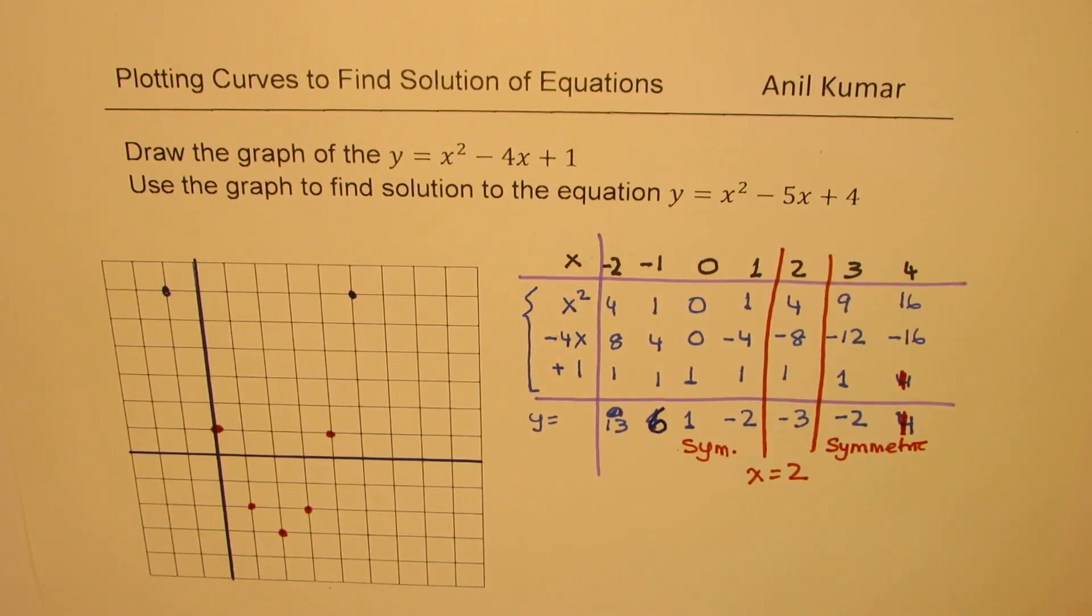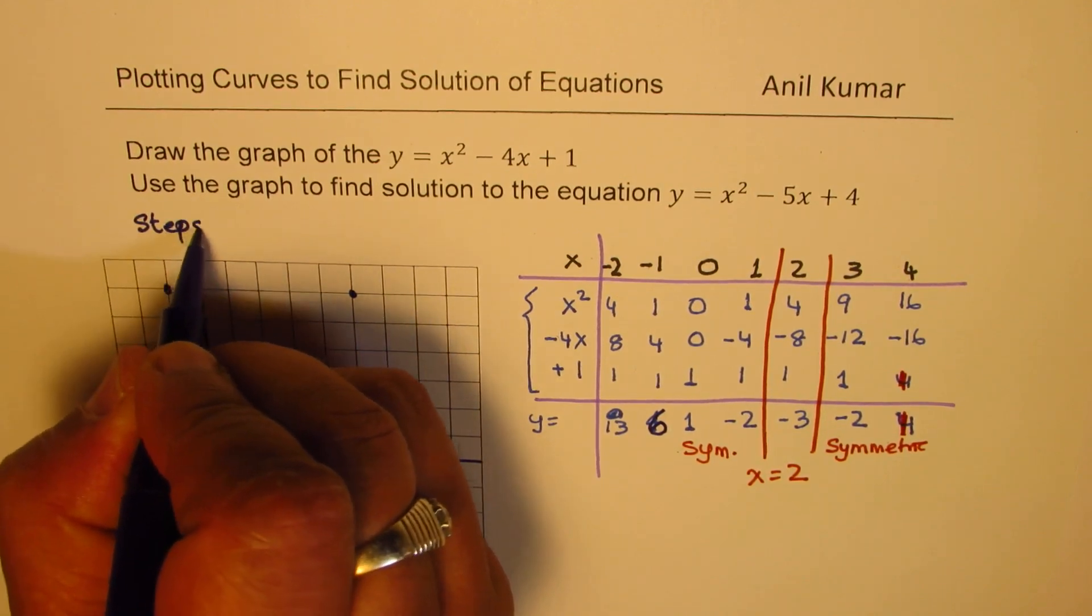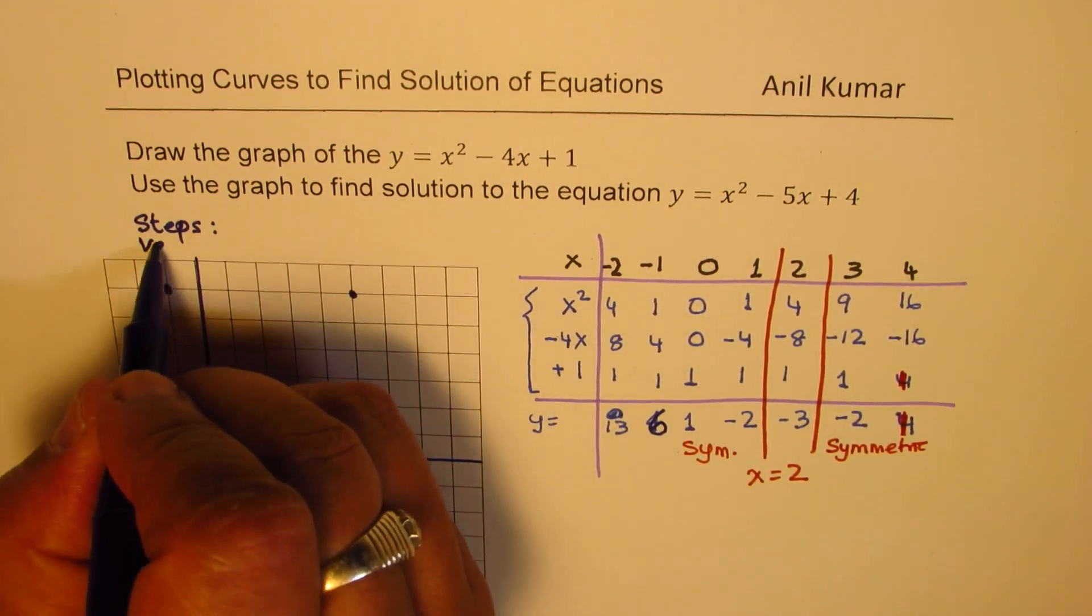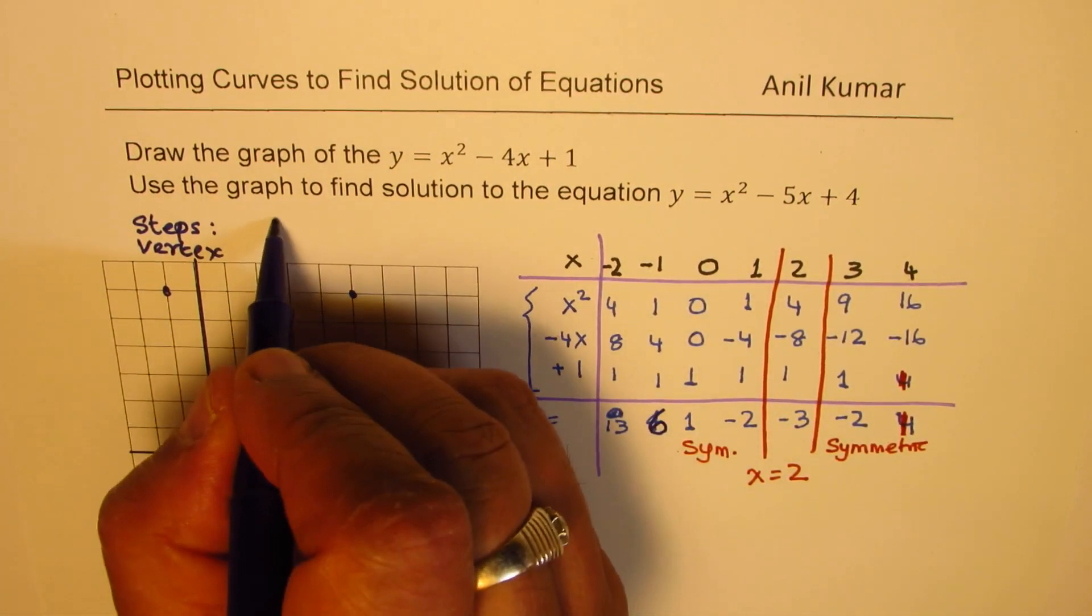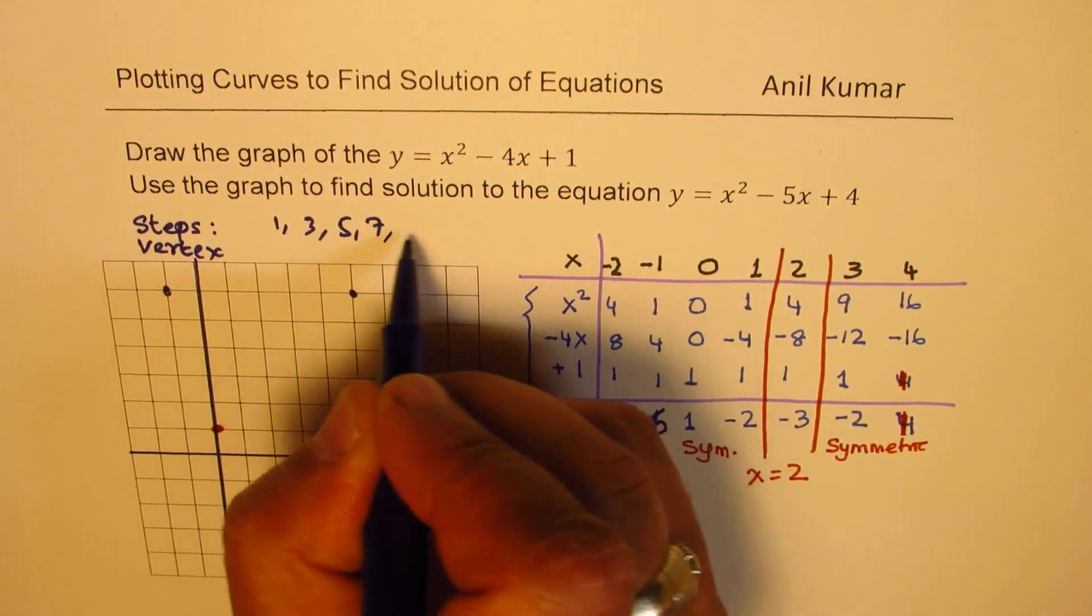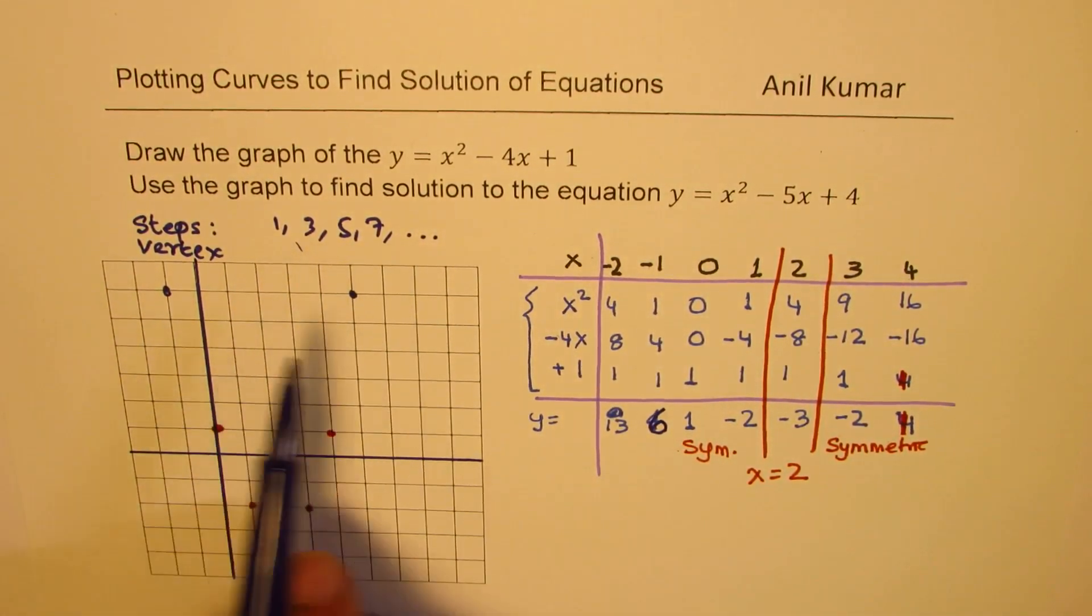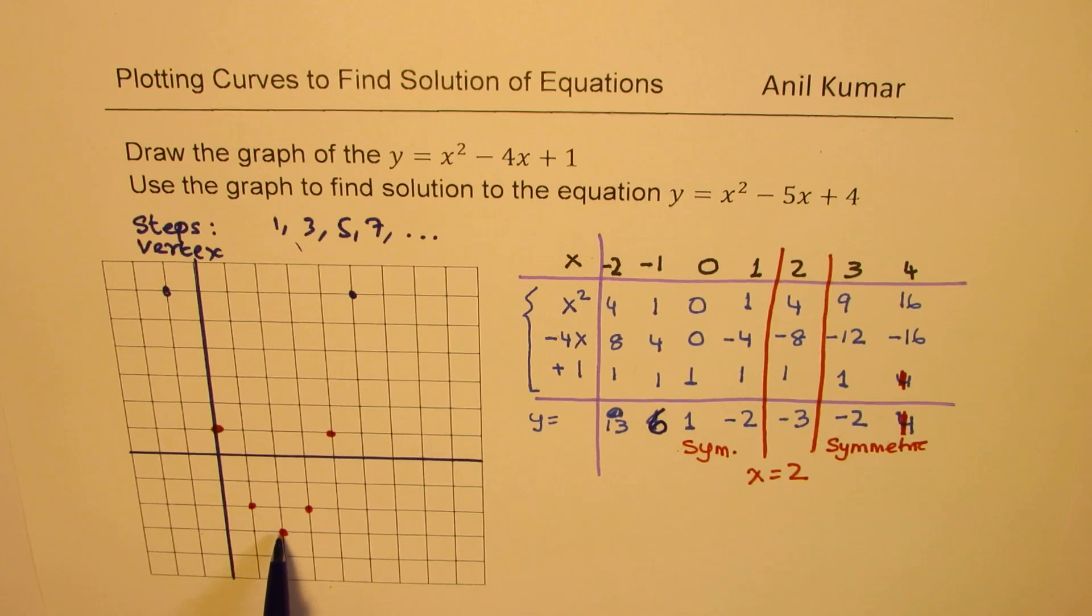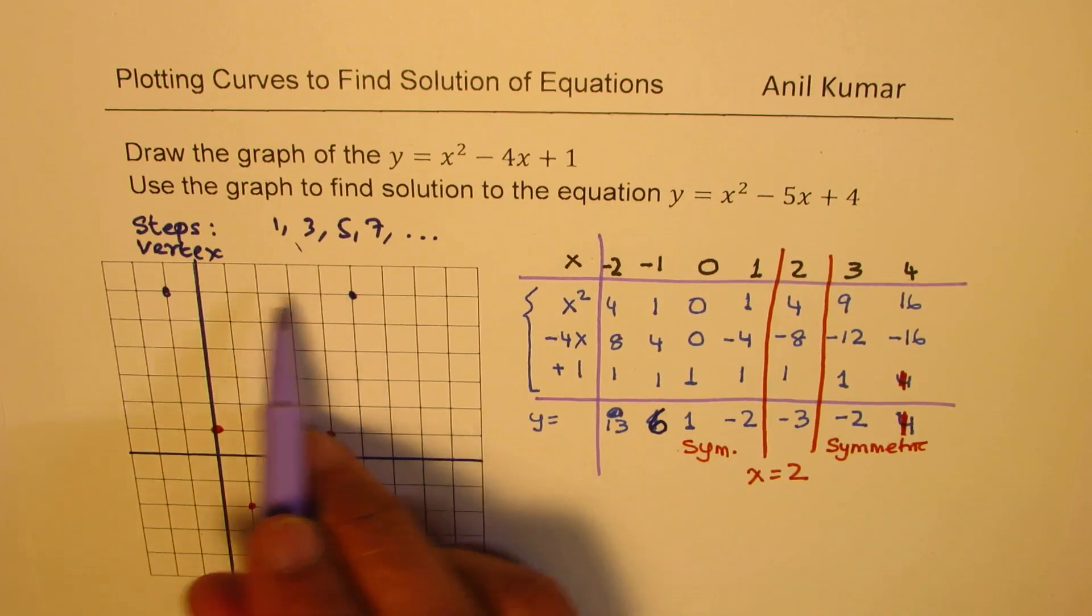Now you could also use the concept of steps. Now from the vertex, the steps if the coefficient is 1 are 1, 3, 5, 7 and so on. So I'm very familiar with this and normally we use this concept. So you'll see here that you go one step up first, and then 1, 2, 3, and then you go five steps. 1, 2, 3, 4, 5. That is correct.